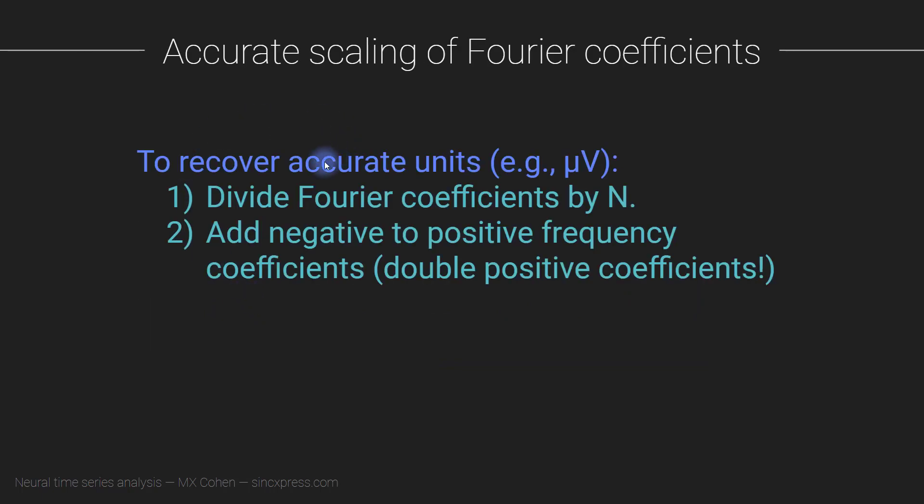So there you go. To recover the accurate units from the Fourier transform, for example, it might be microvolts if that's what your signal was originally recorded in, you have to divide the Fourier coefficients by N. And then you have to sum together all of the negative and corresponding positive frequency coefficients. And in practice, that really just means that you ignore the negative frequencies and double the positive frequency coefficients.